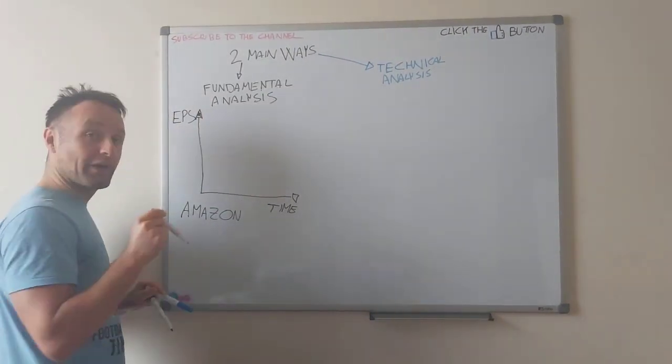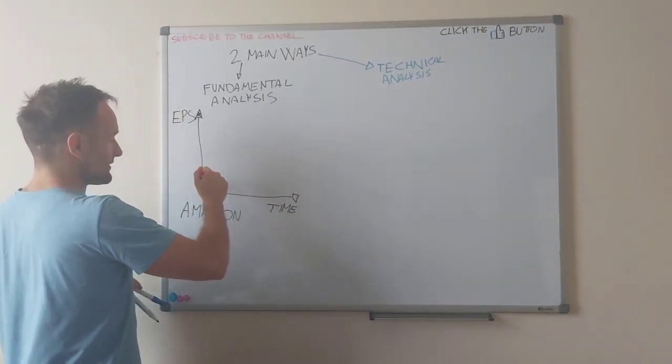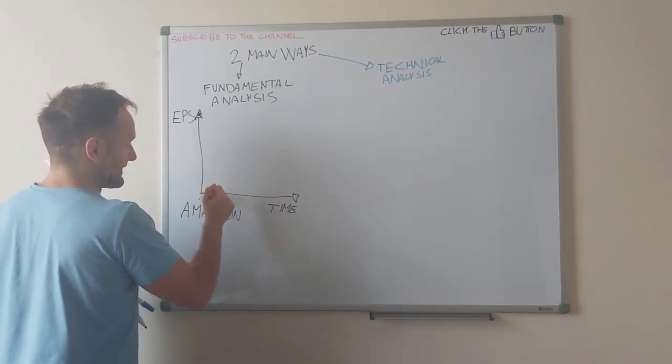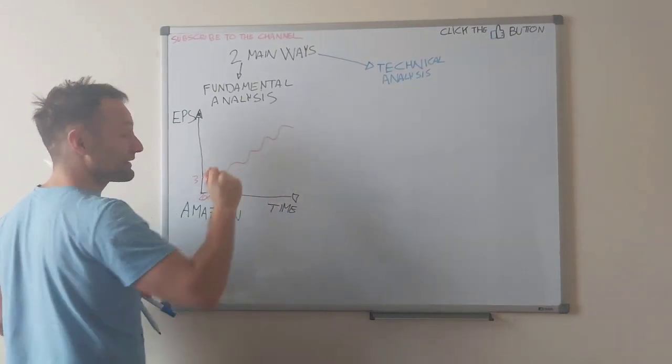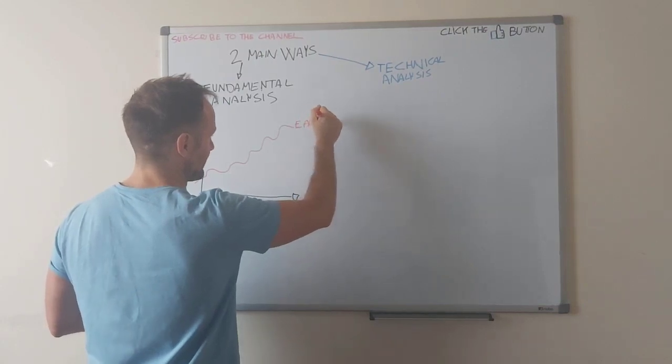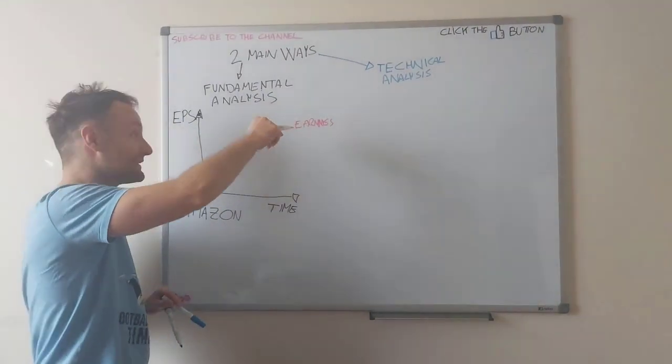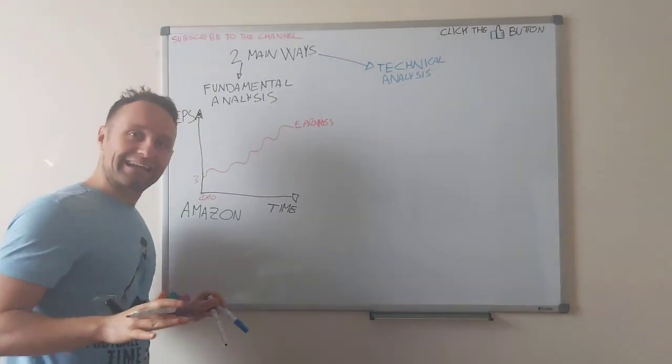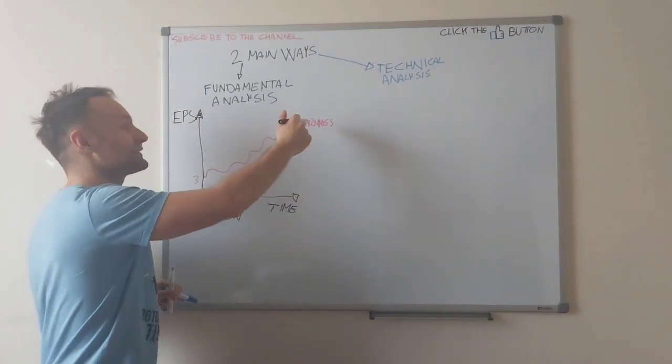So what will happen? We want to buy a stock that will grow its earnings over time. Let's imagine that Amazon was earning in 2010, was earning three dollars per share. It will go up and will go down, but more or less earnings go like this. We'll go up, we'll go down, but we need to find stocks that will increase over time for fundamental analysis. It's not always the case, but is the best case scenario.